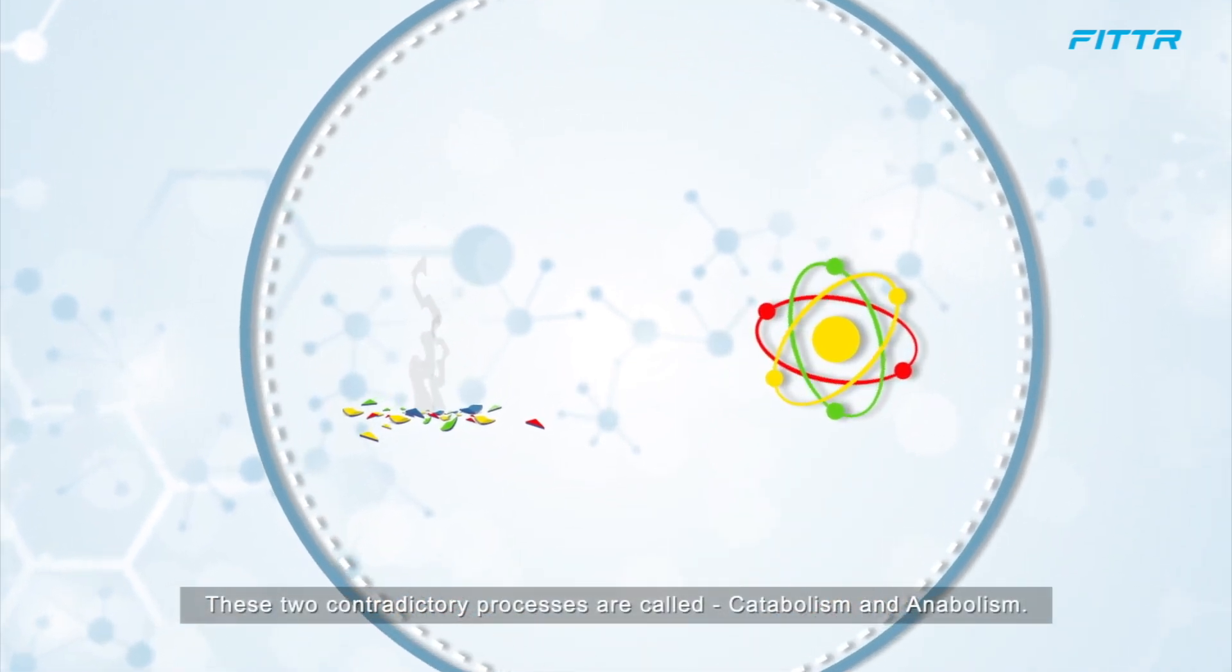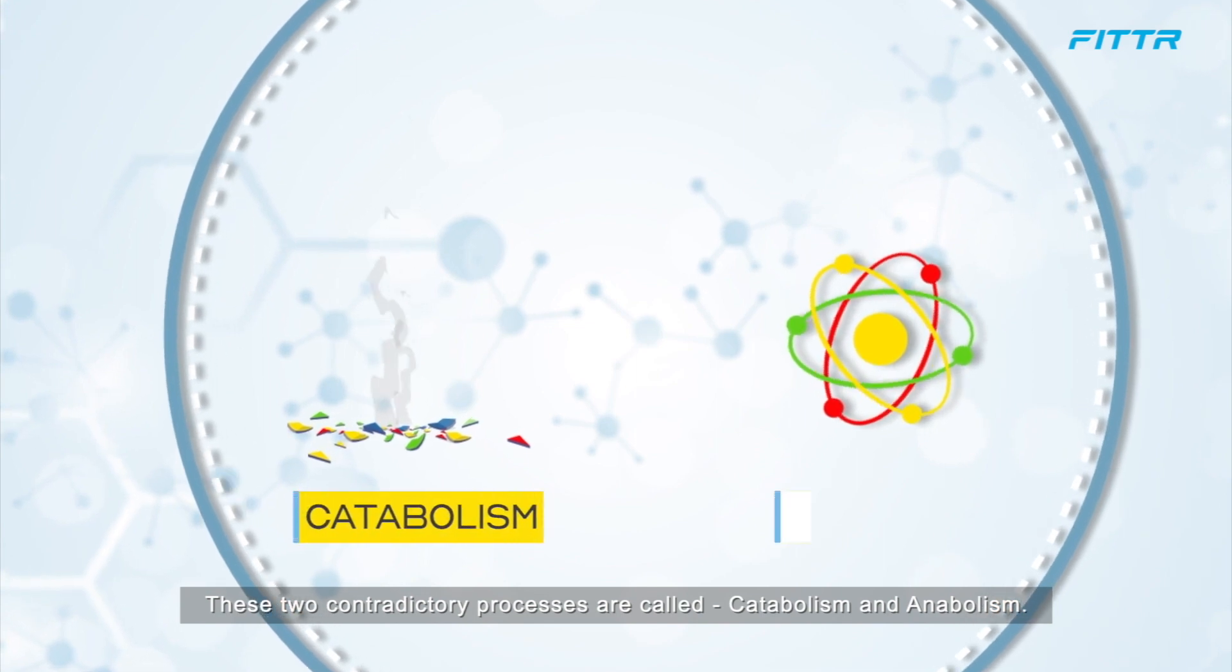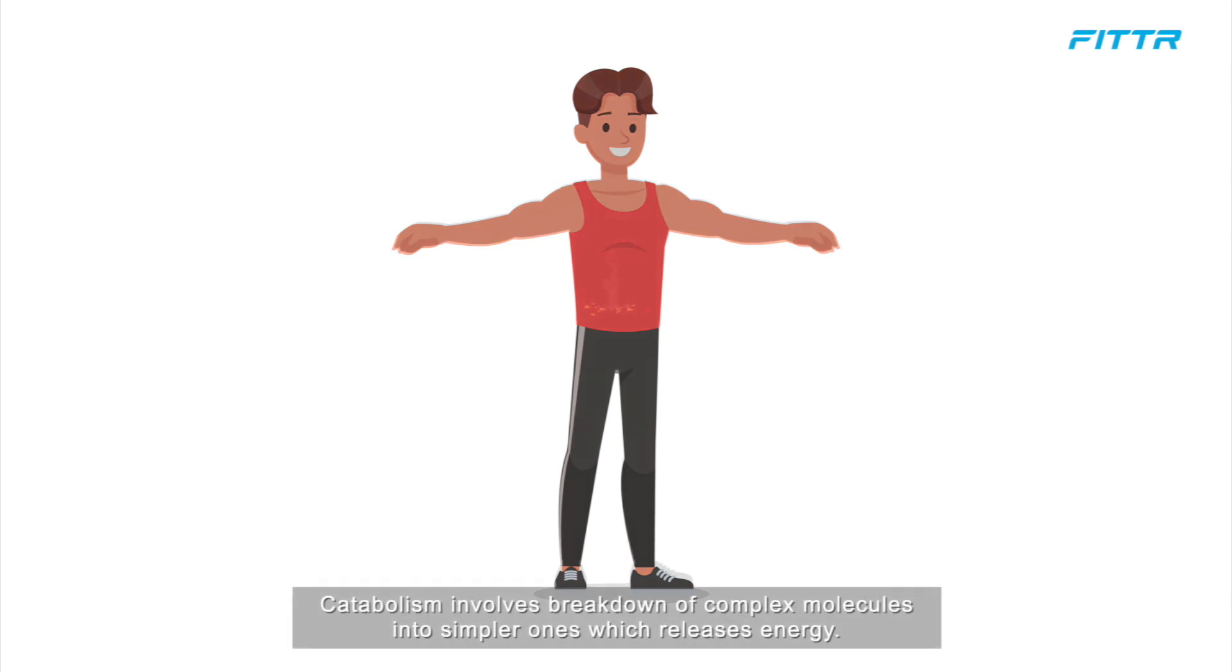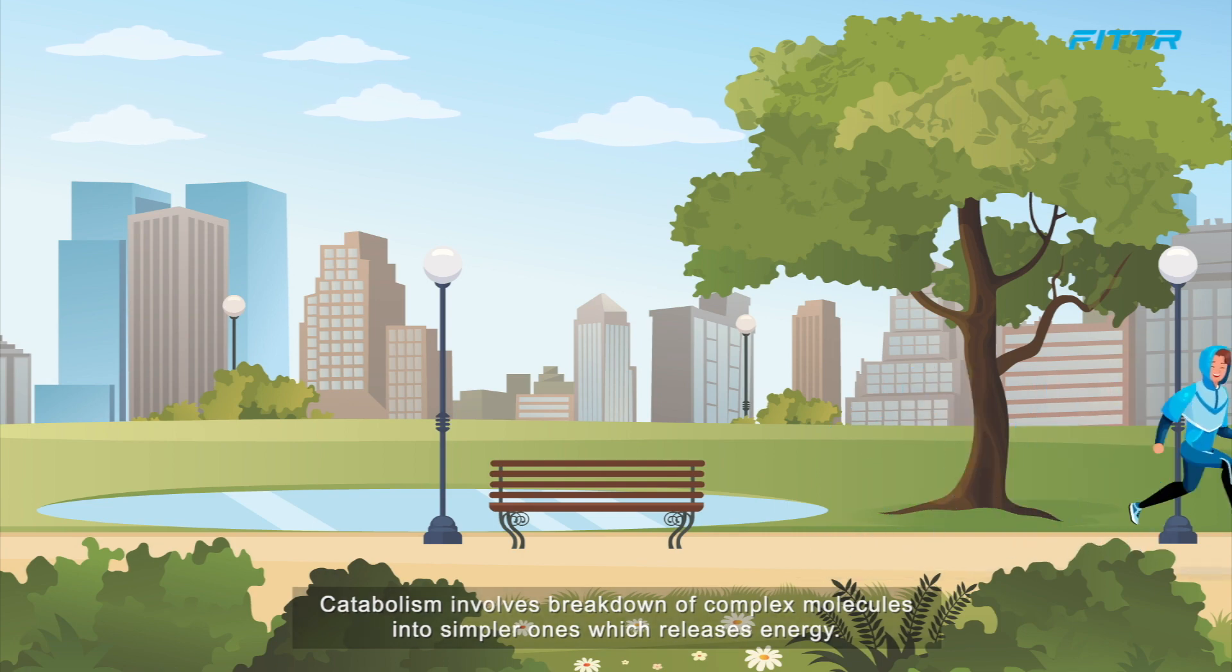These two contradictory processes are called catabolism and anabolism. Catabolism involves the breakdown of complex molecules into simpler ones which releases energy.